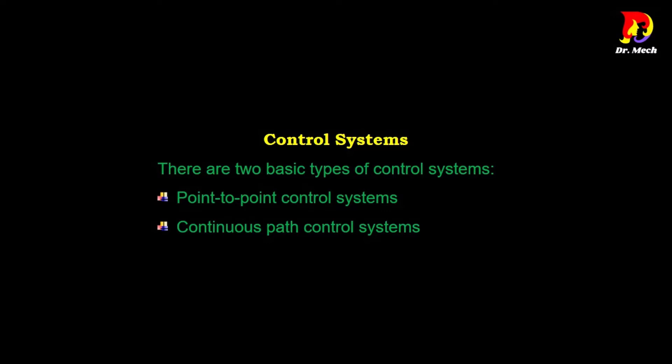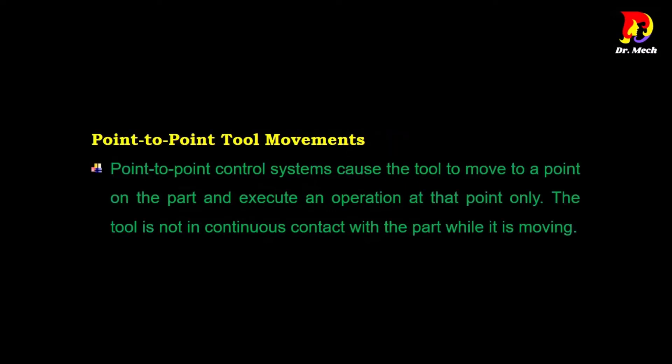There are two basic types of control systems: point-to-point control systems and continuous path control systems. Point-to-point control systems cause the tool to move to a point on the part and execute an operation at that point only.